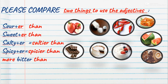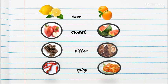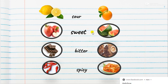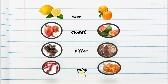Okay students, please try to do this. Look at the pictures. First: lemon and orange — adjective is sour. Second: apple and watermelon — adjective is sweet. Third: chocolate and coffee — adjective is bitter. Fourth: pepper and kimchi — adjective is spicy. Please make sentences using these eight pictures and the four adjectives.